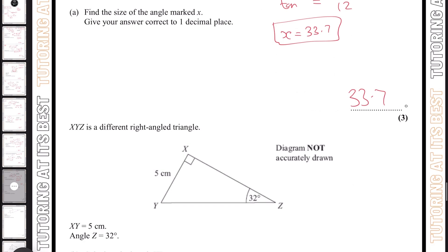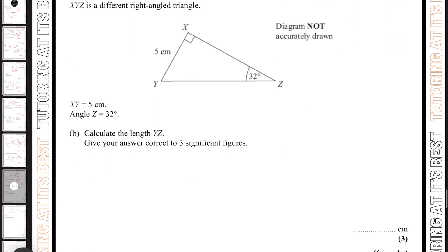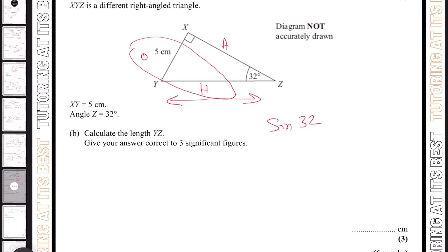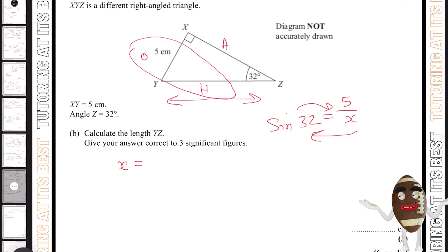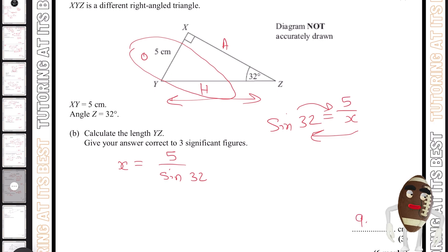Part b states that we need to calculate the length of YZ. We label our sides again. We have our opposite and our hypotenuse, so that's going to be sin. We have sin 32 equals 5 over x. We make x the subject by swapping these two around: x equals 5 over sin 32, which gives us 9.44. And that is your answer.